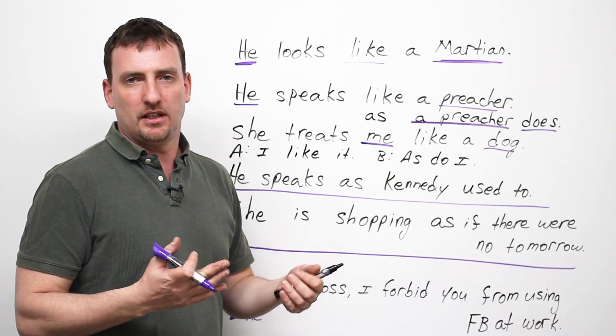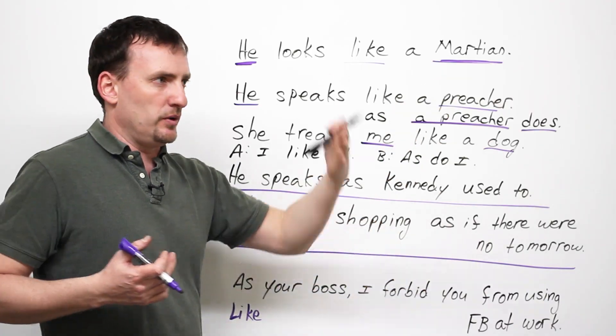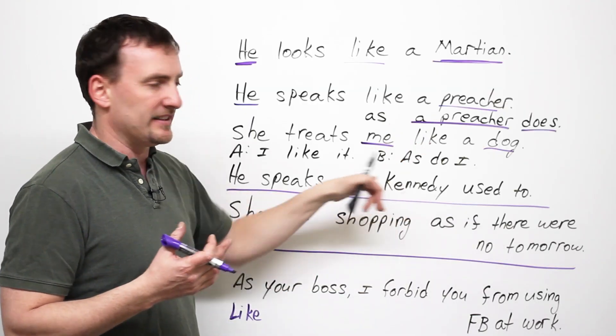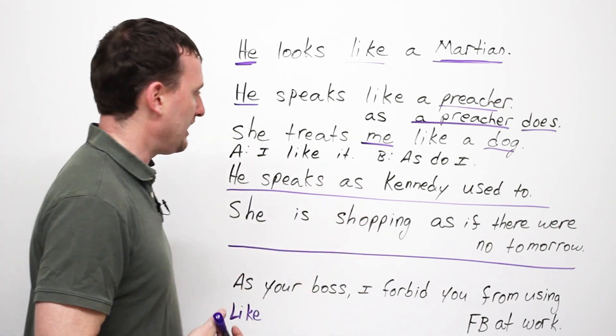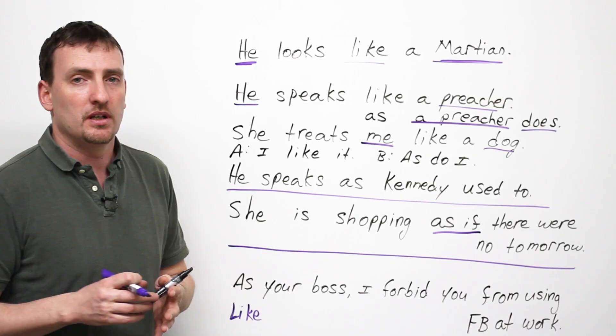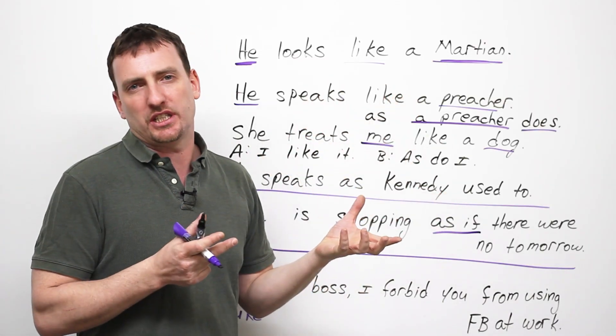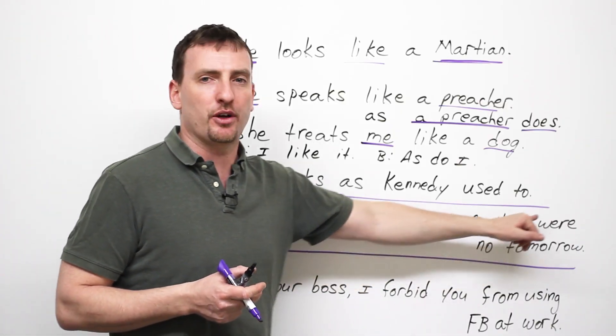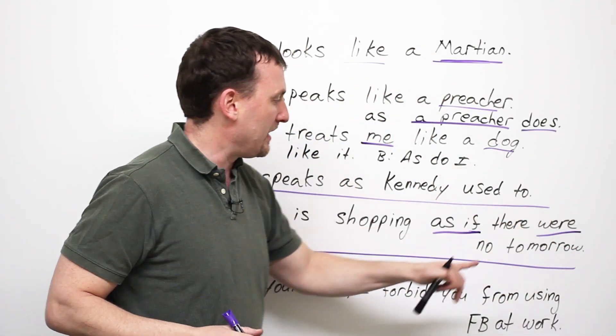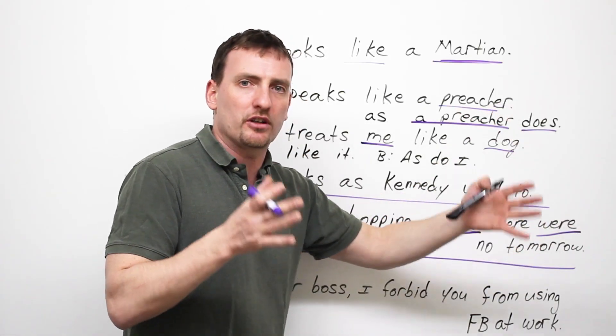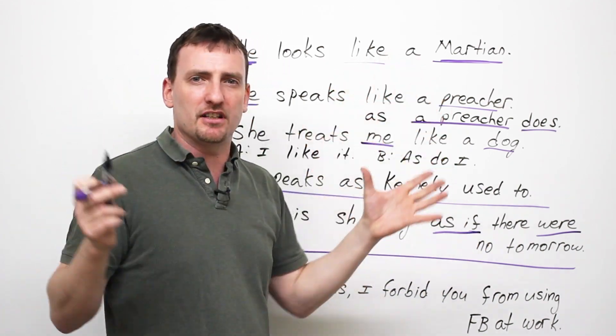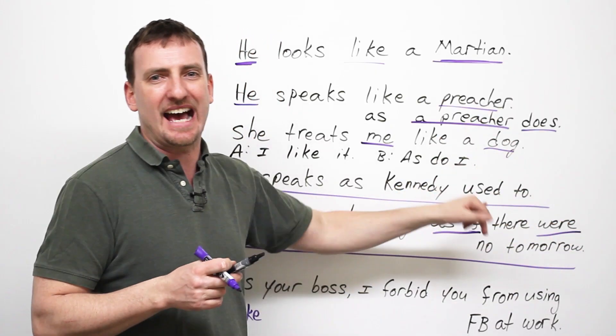Or, he speaks as Kennedy used to. So, we're talking about Kennedy's grandson. We saw him give a speech to a large audience. You say, wow, he speaks as his father used to. Means in the same way, the same approach, the same aura, the same carriage. Now, sometimes, you might see as if or as though. It basically means you're comparing an unreal situation. She is shopping as if there were no tomorrow. So, you have the if with the were, the subjunctive. That's a whole other lesson. You keep that in mind. But as if, there were no tomorrow. You have a full clause after the as if. So, it's sort of like like, but it's such an unreal situation and we're talking about an action that we use as if.